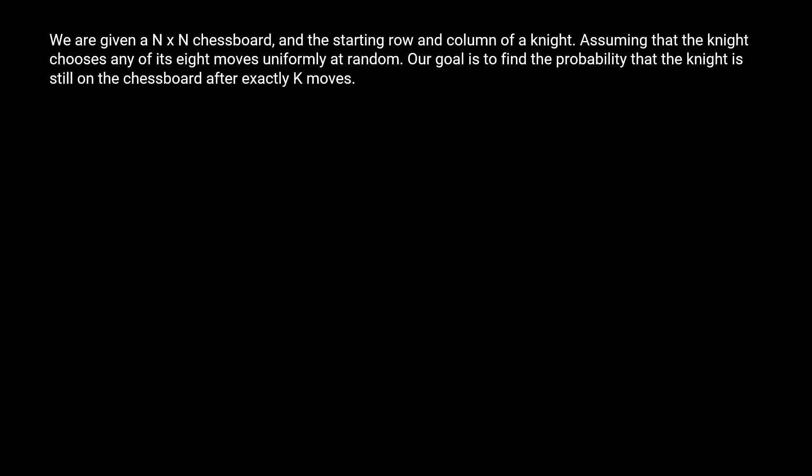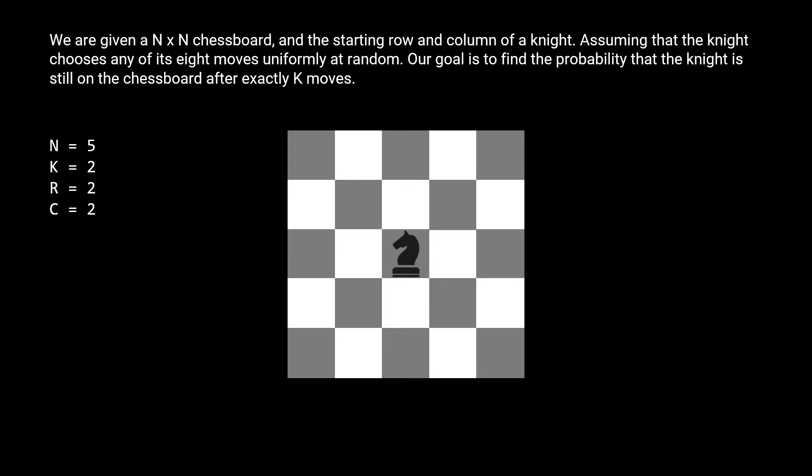Let's look at an example. n is 5, so we have a 5 by 5 chessboard. The chessboard is indexed by 0, so when r and c are 2, the knight starts off in the center of the board. k is 2, so the knight can make any combination of two consecutive moves.